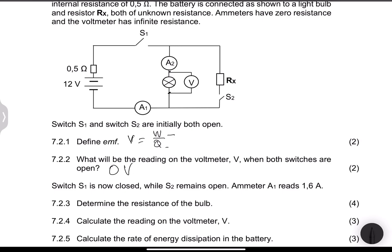So they say switch S1 is now closed while switch S2 remains open. When S2 is open, there is no current flowing within resistor RX, so it's as good as that resistor doesn't exist. Please keep that in mind because there's no current flowing there. The ammeter A1 reads 1.6 amps. So now we know the current that's passing through the circuit.